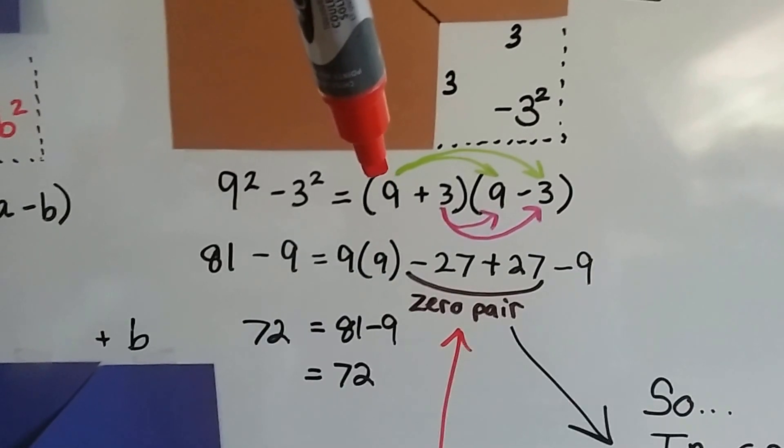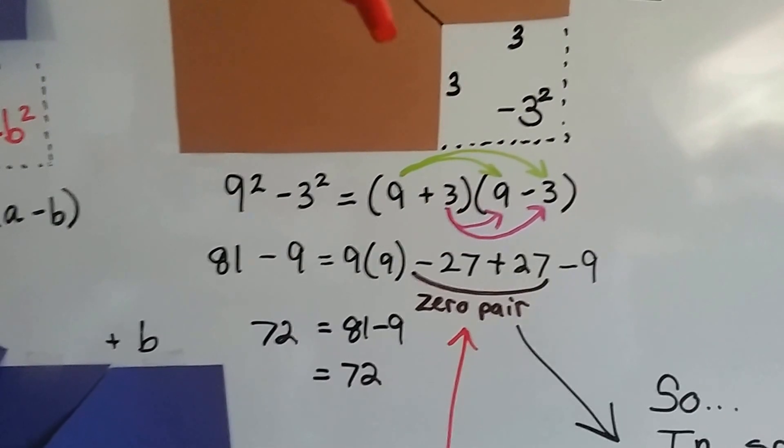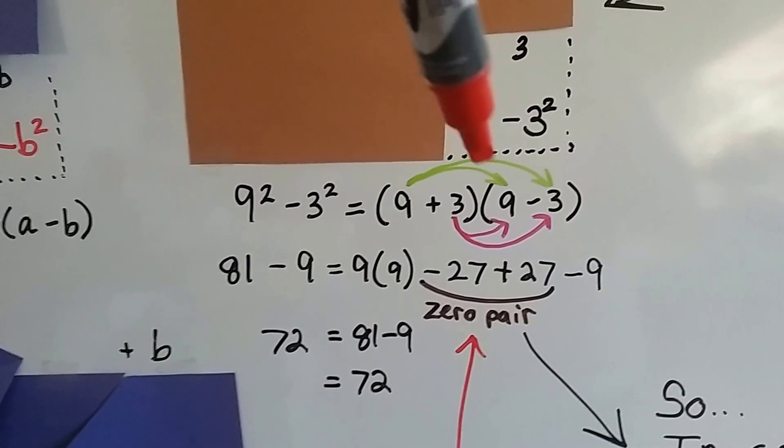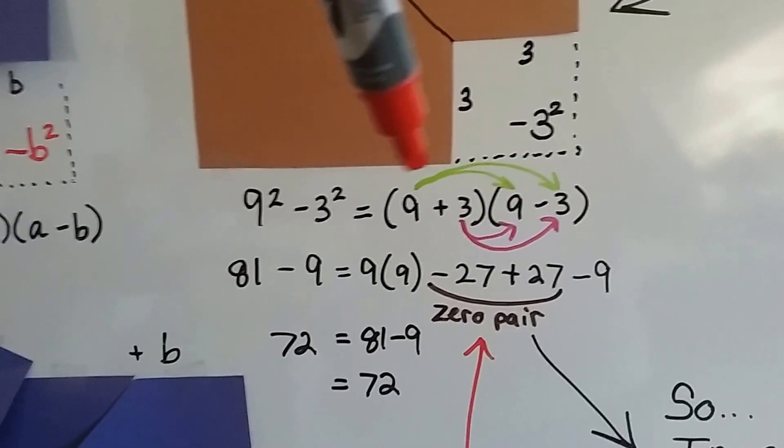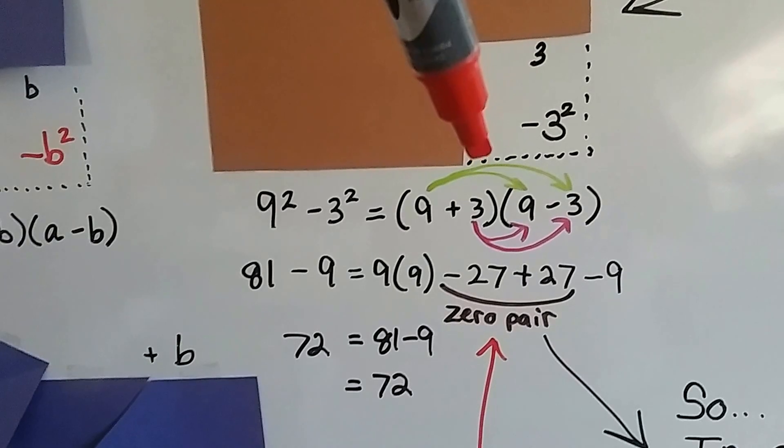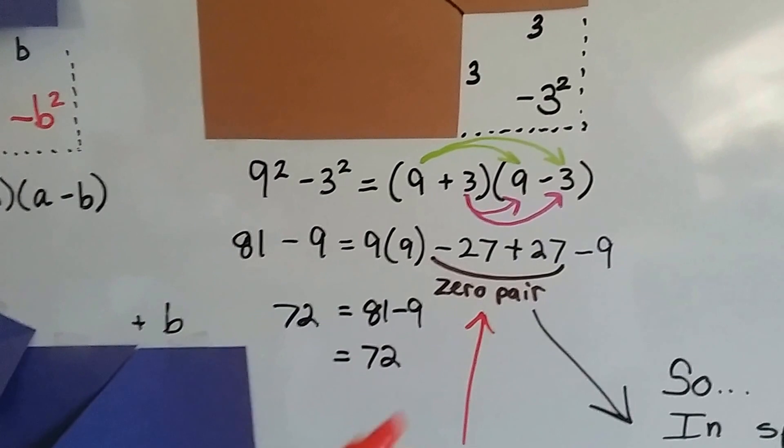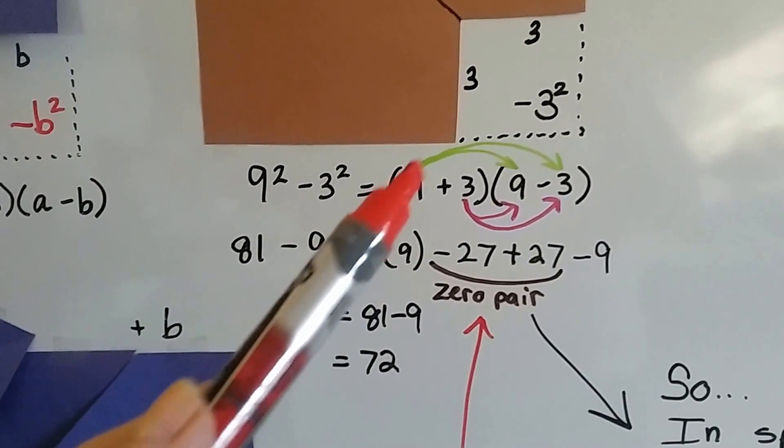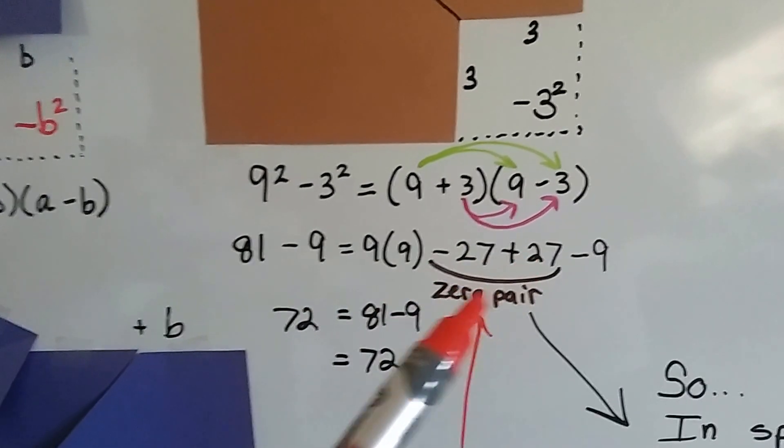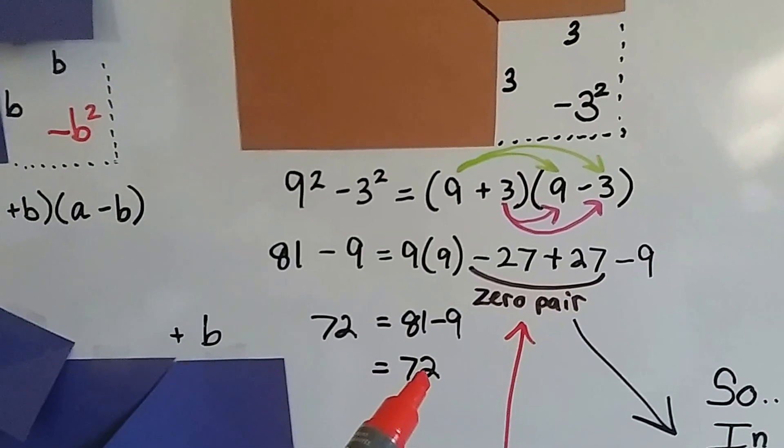And then we do the outside, 9 times a negative 3, that gets us a negative 27. So we did f for the first, we did the o for the outside. Now we got to do the inner ones, 3 times 9, well that's a positive 27. And now we do the last one, positive 3 times negative 3 gets us a negative 9. So now this 9 times 9, the first one, we know that's 81, and this minus 27 plus 27 creates a zero pair. Then we have our minus 9, so we have 81 minus 9, that's 72 units.